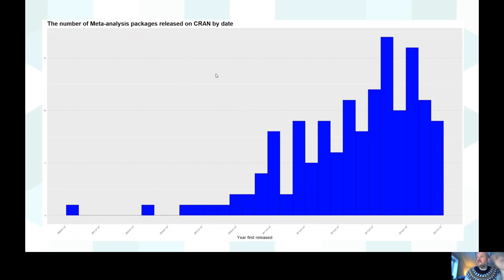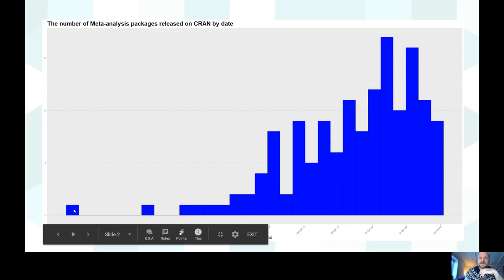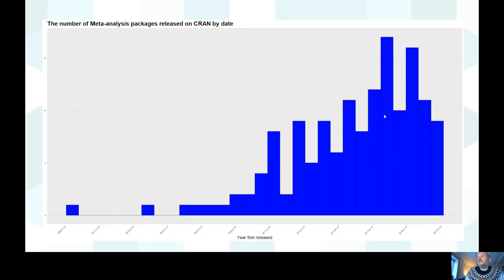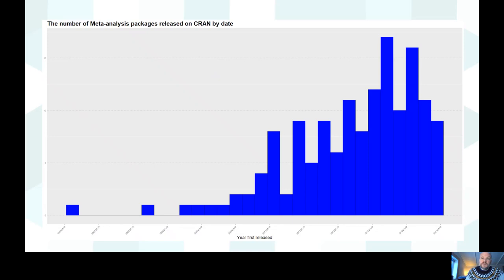You can see that the number of packages has increased over time, from pioneer package 'meta' — a very general package for doing meta-analysis — all the way through to the latest package on the list, NMA plate plot. There are both very general and quite specific packages that have been developed to help with meta-analysis.